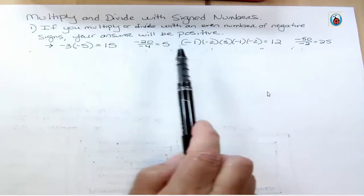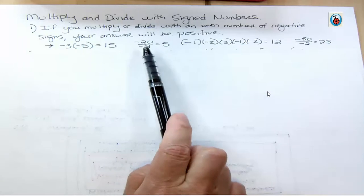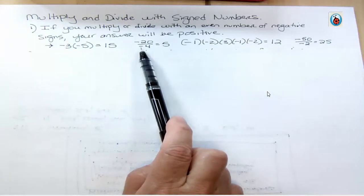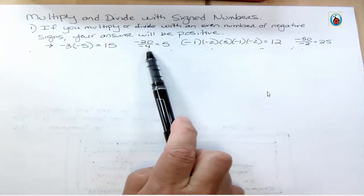If we're dividing with 2, that's even again. Two negatives is an even number. So negative 20 divided by negative 4 gives you positive 5.